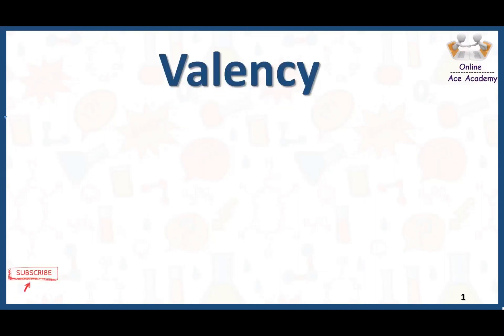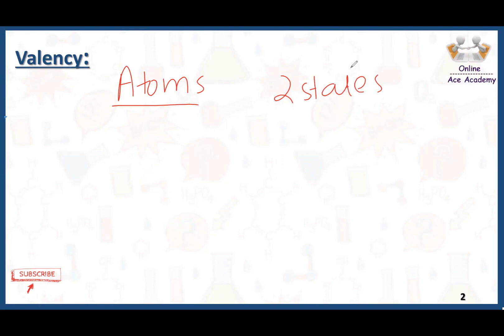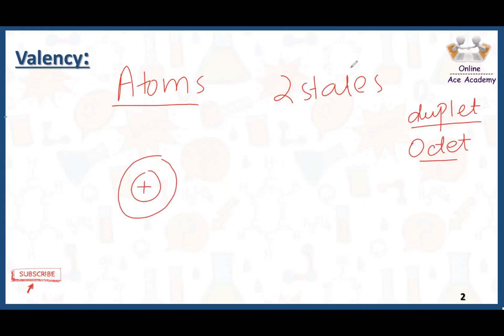In today's video we are going to talk about valency. As you know, everything around us in this universe wants to get stable — the same is the case for atoms. There are two states in which atoms are very stable: one state is called the duplet state, and if there is one shell in an atom and in that shell there are two electrons, that is the stable state called the duplet state.